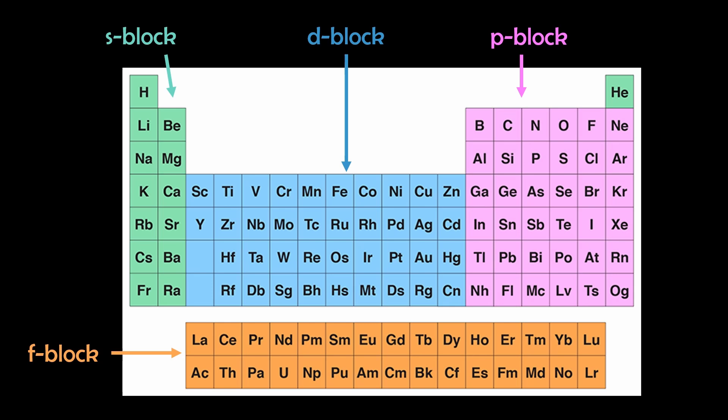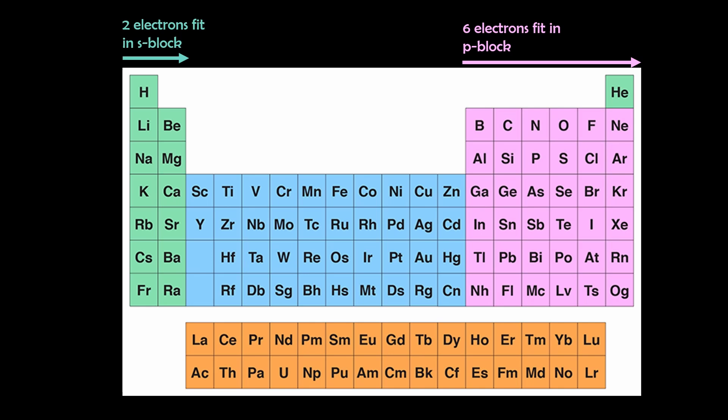So for example, for S, we have two atoms, and therefore two electrons can fit into this subshell. For P, we have six, so six electrons can fit in.